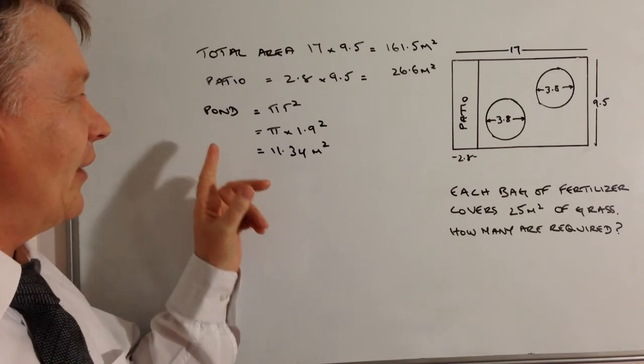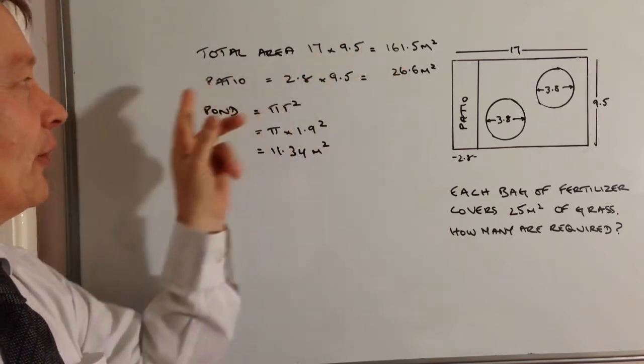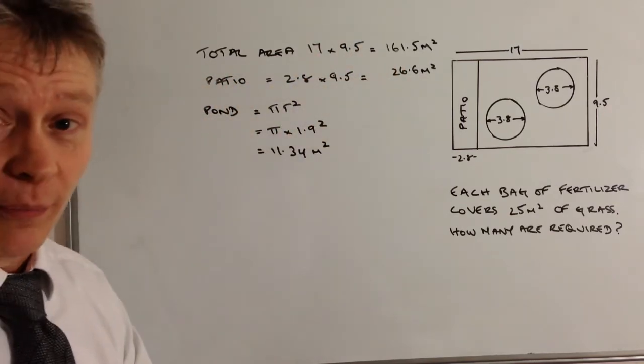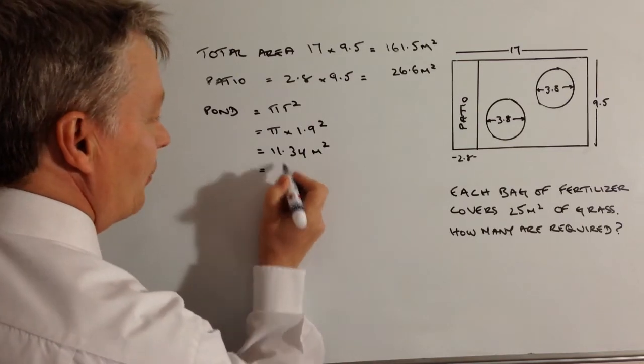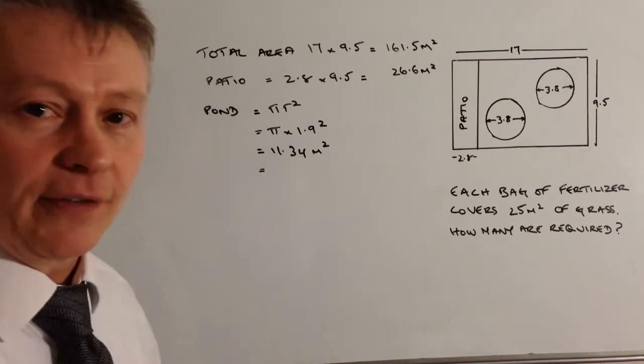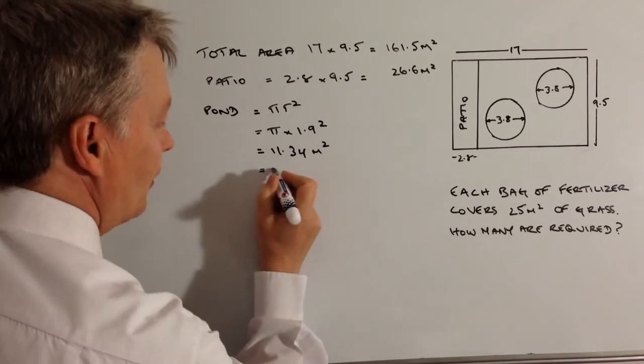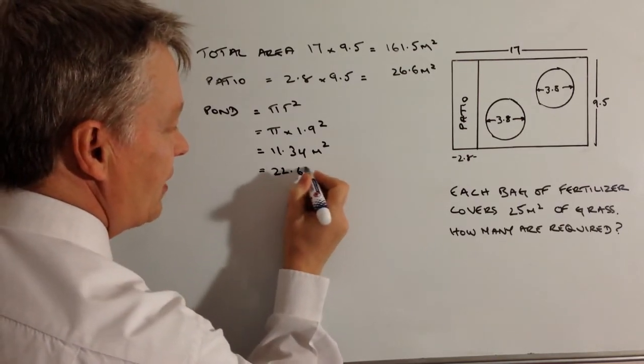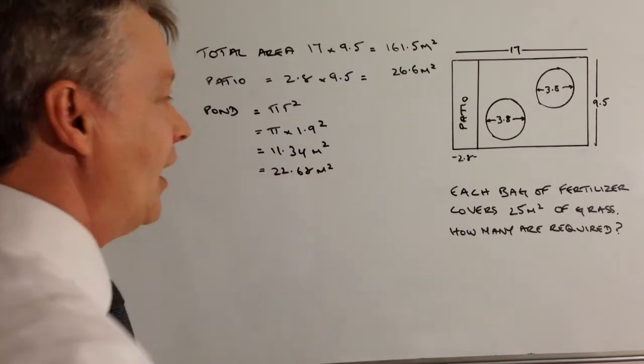Okay, so what we've got now is the area overall, the patio area, one of the ponds, so we need to multiply that by 2, and that's going to give us then the area overall of all of the ponds which is 22.68 meters squared.